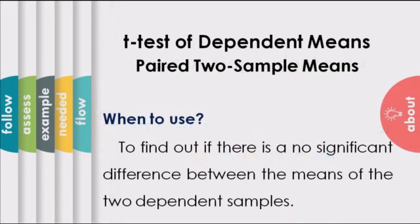We use T-Test of dependent means, also known as paired two sample means, if we want to find out if there is no significant difference between the means of the two dependent samples.